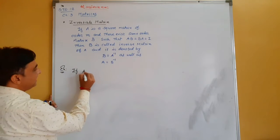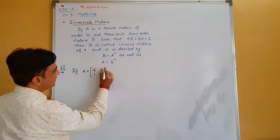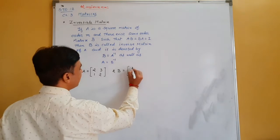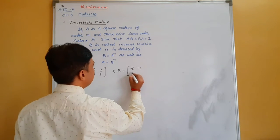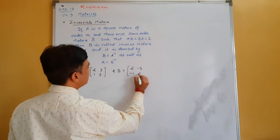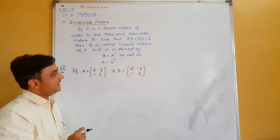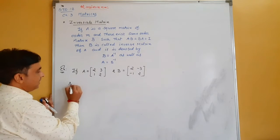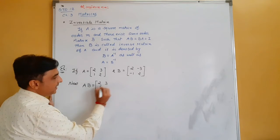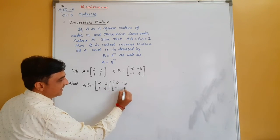For example, let matrix A equal to [2,3;1,2] and matrix B equal to [2,-3;-1,2]. We need to find AB and BA to verify they are inverses.